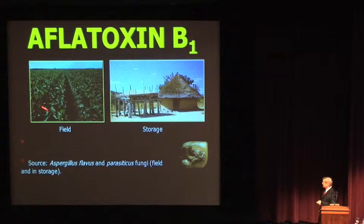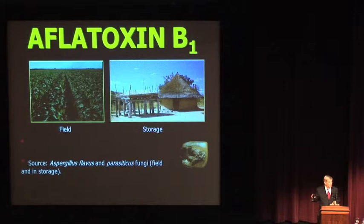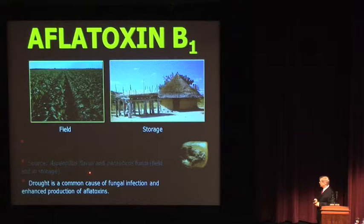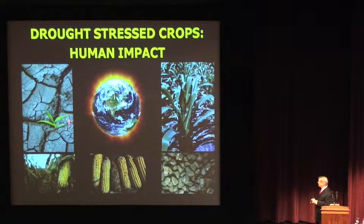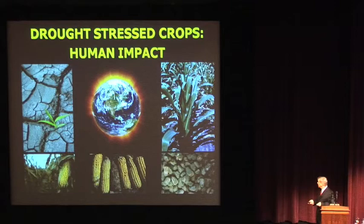Aflatoxin is produced by Aspergillus flavus and parasiticus fungi. They can occur in the field, especially during drought — and that's what we have a lot of here. When the corn comes in, we start to see these levels in our ice cream, our milk, and our corn. Drought is a common cause of fungal infection and aflatoxin production. Why am I talking about drought? Because the earth is heating up. It's definitely warming, and when it heats up, especially in certain parts of the globe, you get drought-stressed plants that can produce very moldy corn with high levels of these compounds.